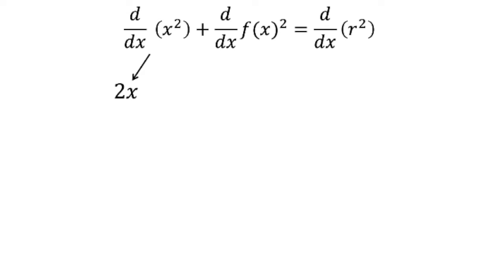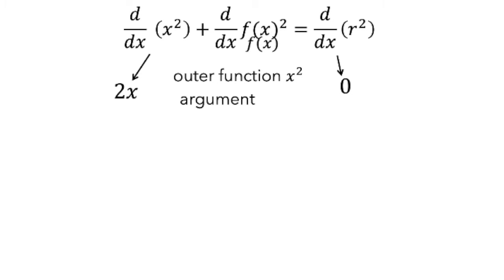If you look at the last term, since r is a constant number, its derivative is 0. Now let's think about the term in the middle. It actually looks like a composition of functions, where the outer function is x squared and the argument, the inner function, is f of x. So using the chain rule, the derivative of this term is 2 times f of x times the derivative of f of x.